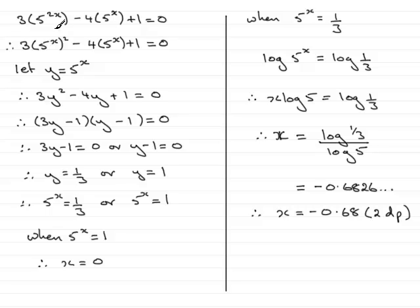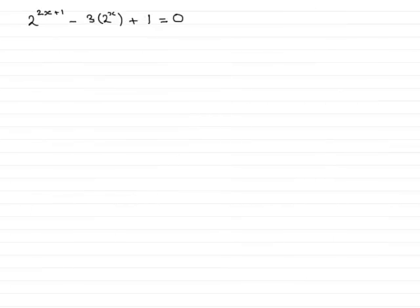Now I want to do another example where this part of the equation is in a slightly different format. Here it is: we now have 2 to the power 2x plus 1, minus 3 multiplied by 2 to the power x plus 1, equals 0.